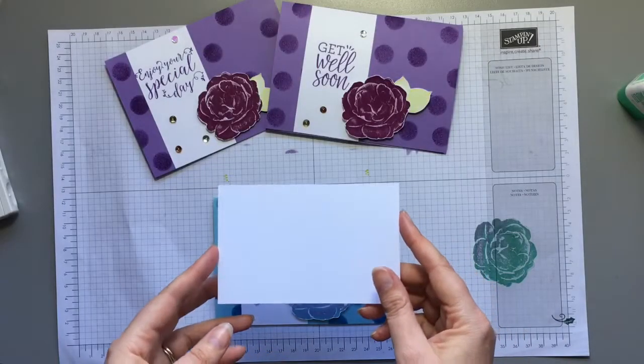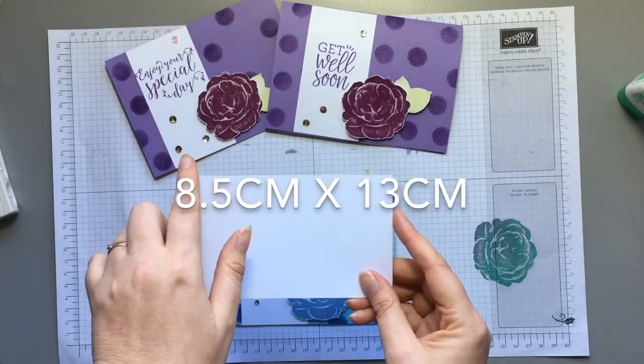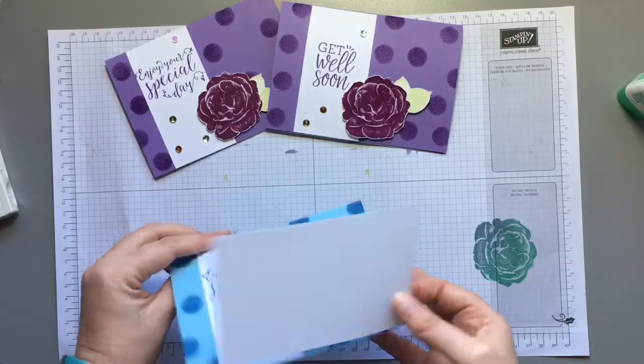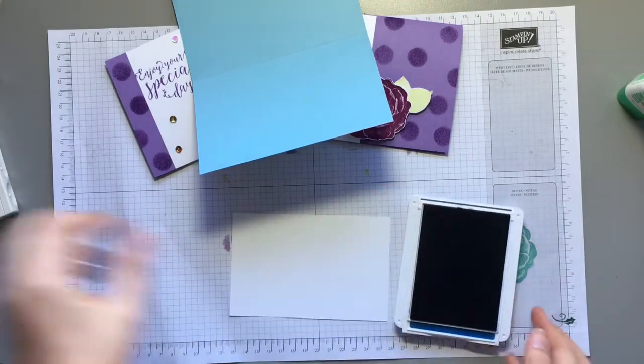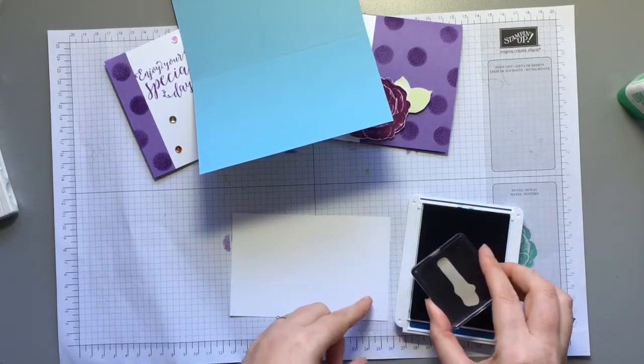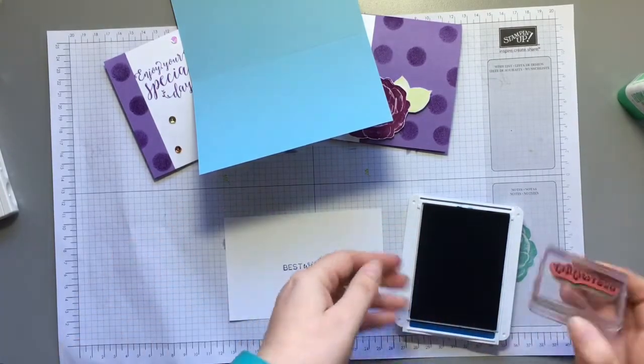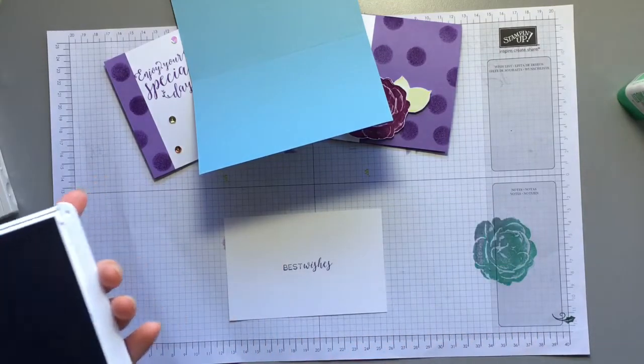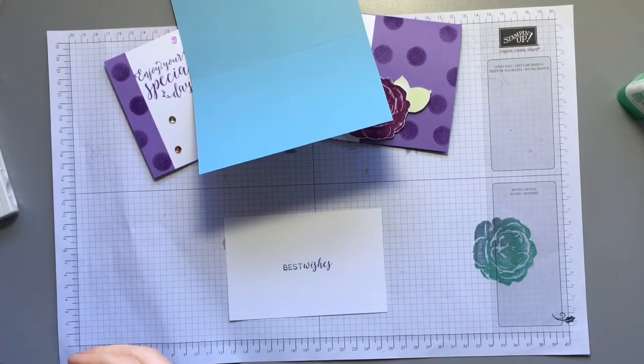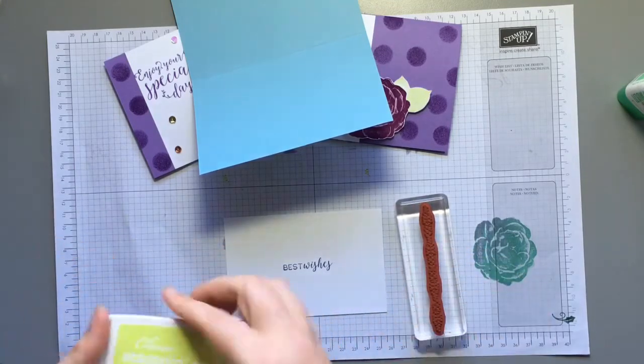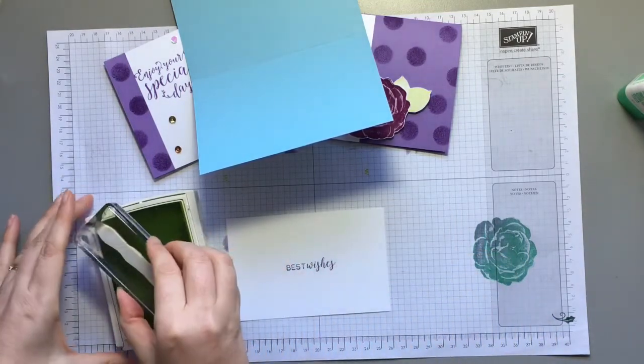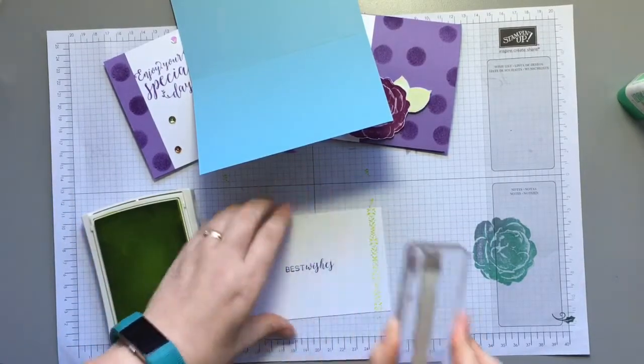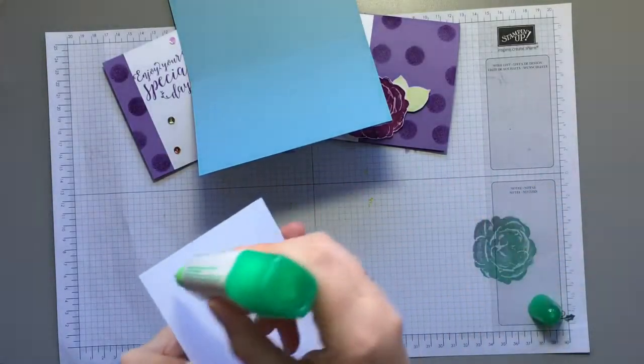For the center of my card I've used an 8.5x13cm piece of Whisper White and I'm going to grab the Blueberry Bushel again and the Best Wishes stamp and I'm grabbing the long thin stamp from the Stitched All Around stamp set. Inking it up in Lemon Lime Twist. Now grab the Tombow Liquid Glue and pop the center in.